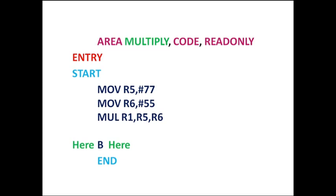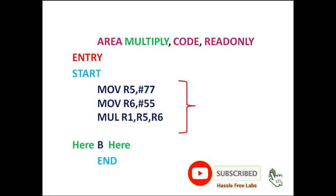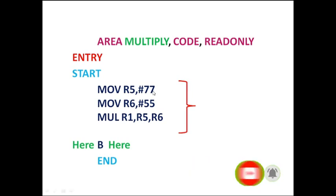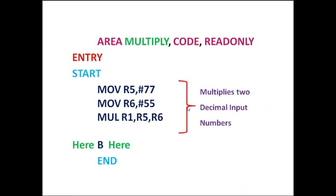First let me show you two of the commonly seen approaches for this task. Coming to the first one: this is the program in which to the R5 register, number 77 is moved, and to the R6 register, number 55 is moved. As you can observe here, these two numbers are decimal numbers and we are simply multiplying them to get the result in the R1 register.